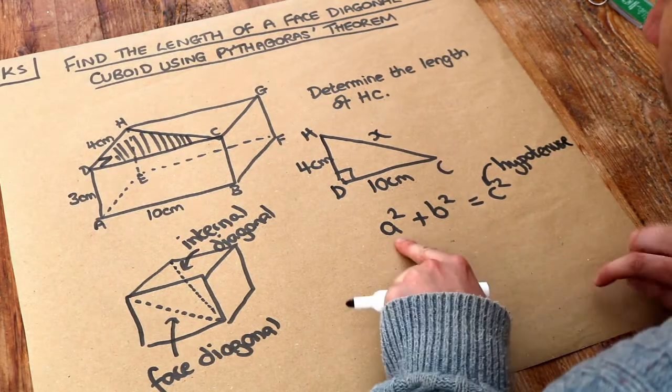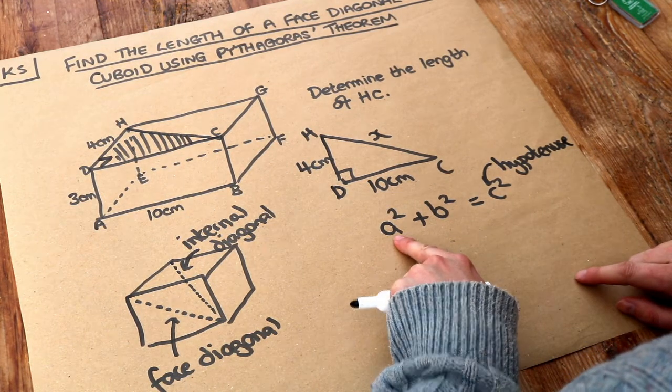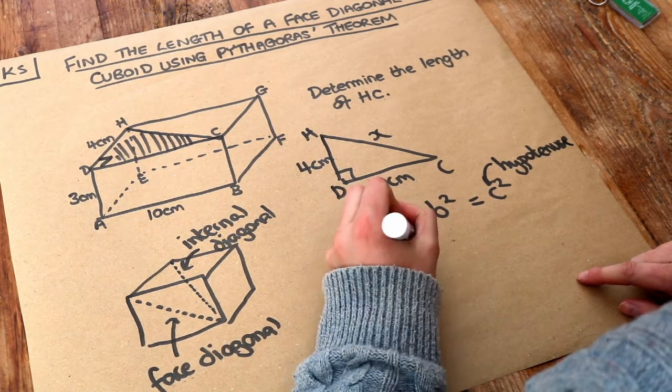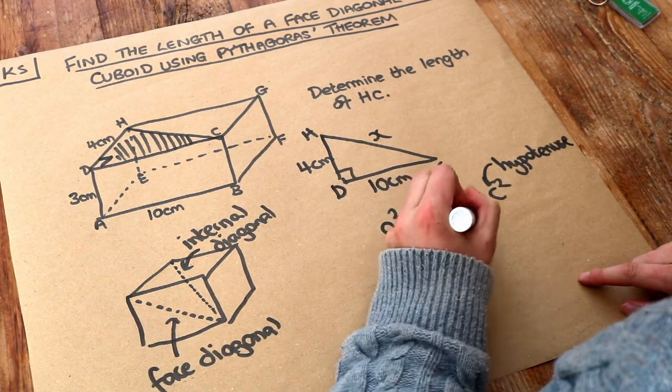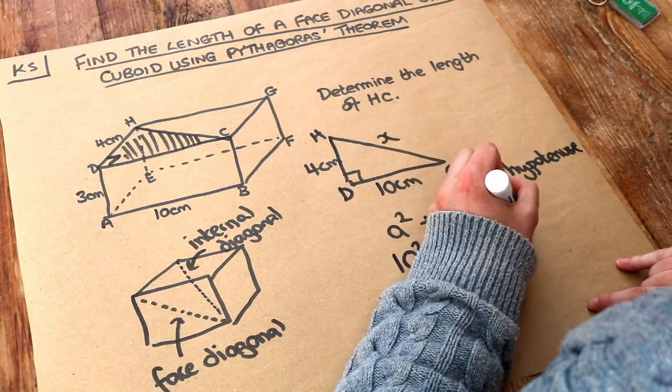So let's fill in our sides. Let's take one shorter length squared, so 10 squared, we could also use the 4, plus the other shorter length squared, so 4 squared, and that is equal to the longest length squared, x squared.